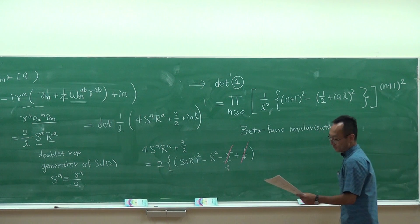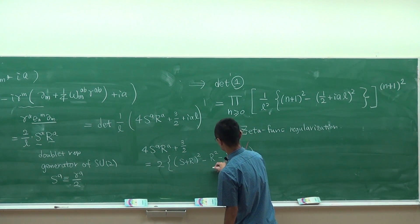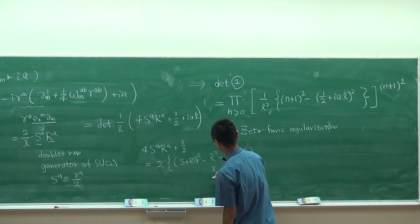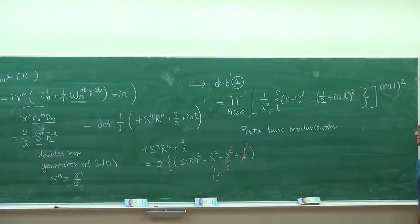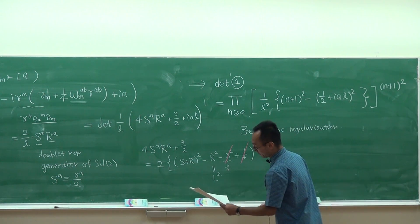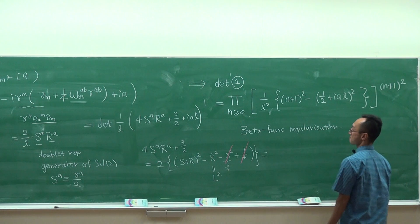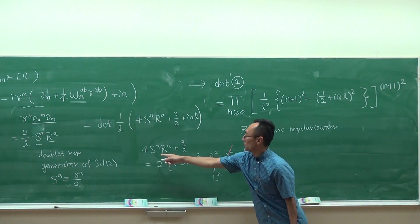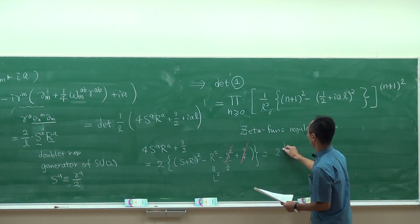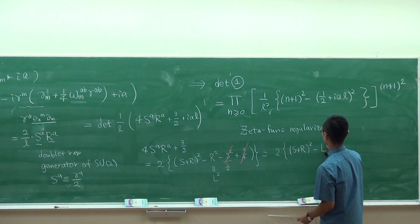Also, for scalar spherical harmonics, as I said, R² and L² are equal. I use this relation. The result is that this combination can be rewritten as (S + R)² - 3/4.